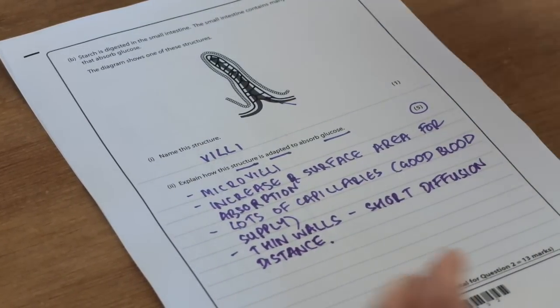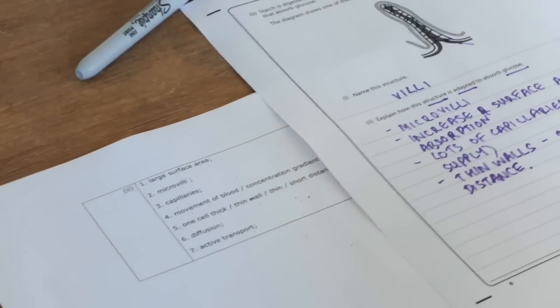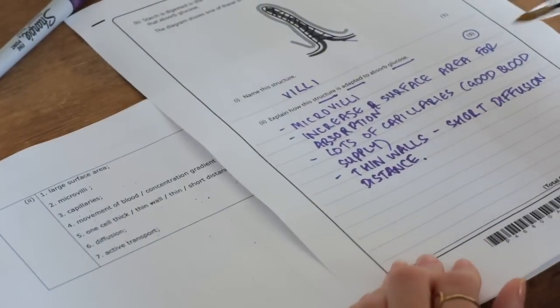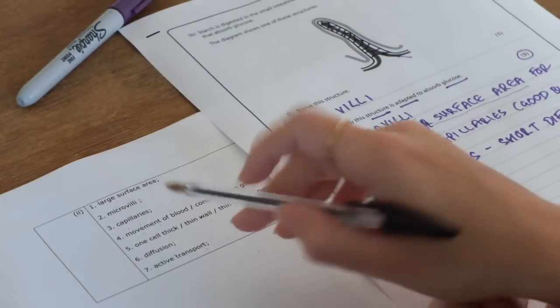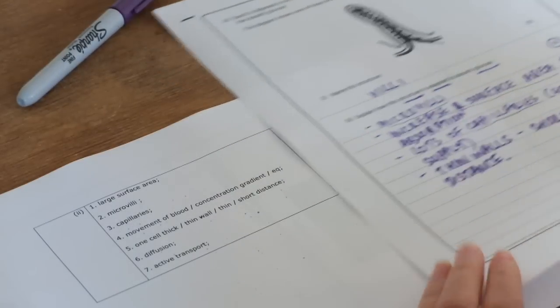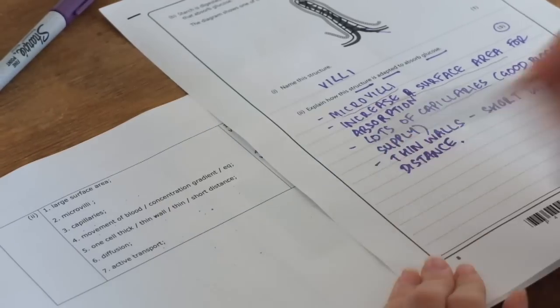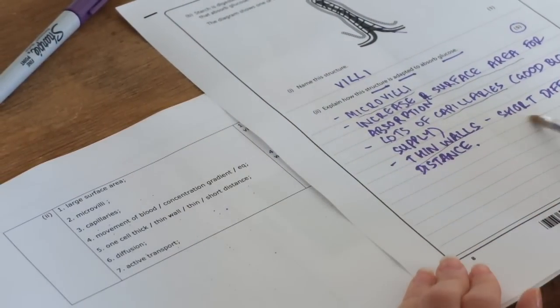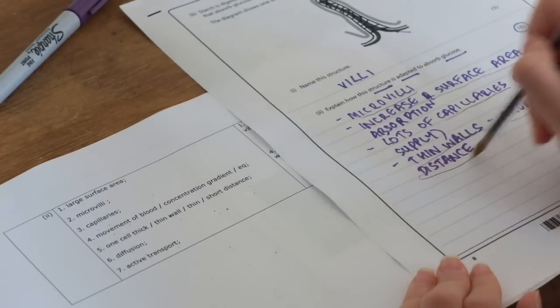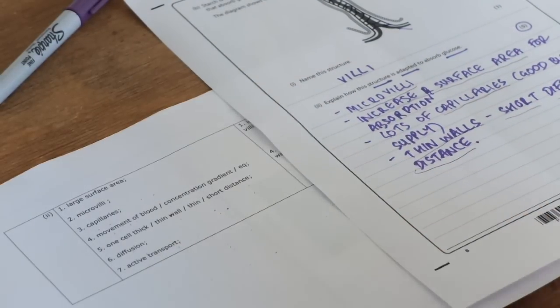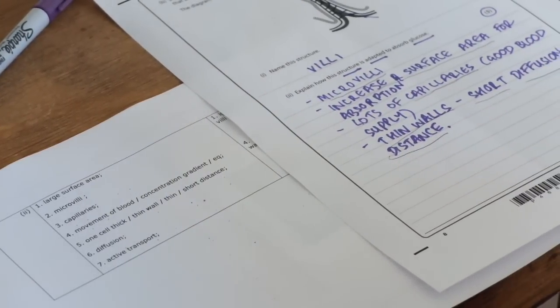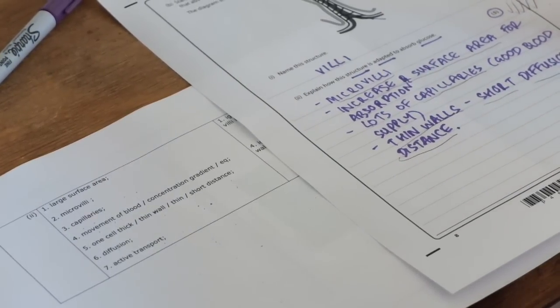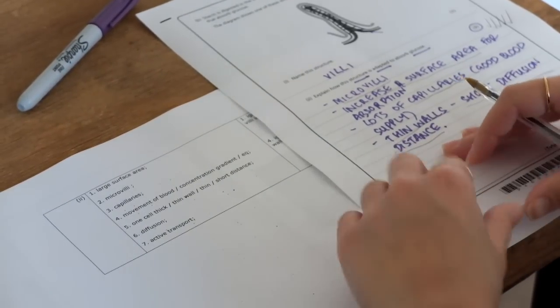I'm going to stop there and now I'm going to look at the mark scheme. And the good thing to do here is to underline the marks you've been awarded so you can try and remember them for next time. As I can see, I've got the microvilli mark, I've got the large surface area, they've got a mark just for writing the word capillaries. I didn't mention the movement of blood, so I haven't got that one. However, I did say thin walls. So that's another mark. And then I said short diffusion distance. I've got short distance there, but I've also got diffusion there. I didn't mention active transport and I didn't mention the movement of blood. However, I've actually made six of the points, so I've definitely got my five marks.